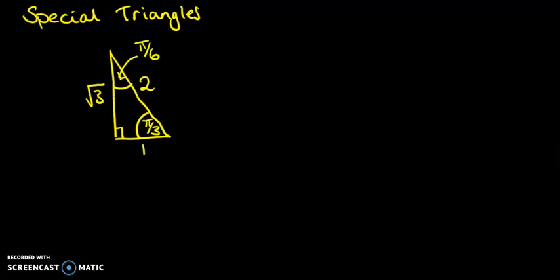Now from that, we can get all of the exact trig values for 30 degrees or 60 degrees—or if you're in radians, π/6 or π/3. We can do sine, cos, and tan on them just using our trig ratios. I'll summarize them in a table.